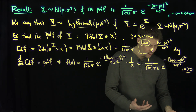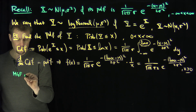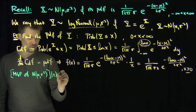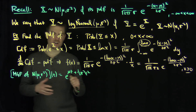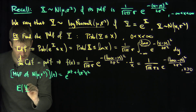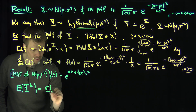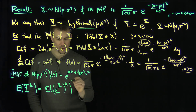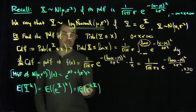You might think computing moments of this will be a hassle, but here's a clever trick. Recall that the MGF — the moment generating function — of a normal distribution with parameters mu and sigma squared is e to the mu t plus one-half sigma squared t squared. To compute the expected value of y to the power k, note that y equals e to the x, so E[y^k] equals E[e^(kx)], which is just the MGF of x evaluated at k.